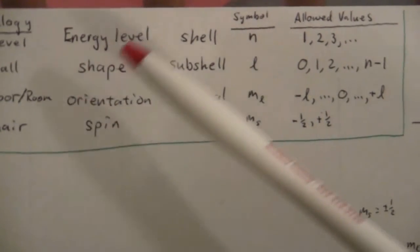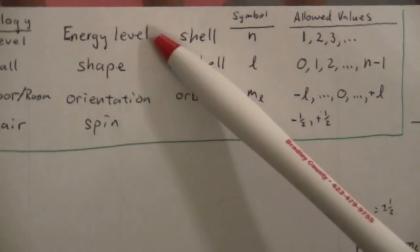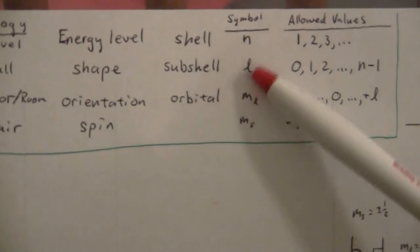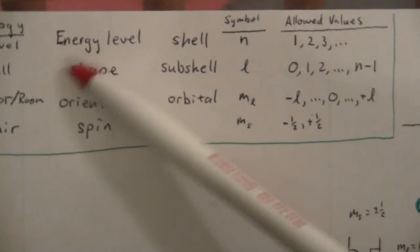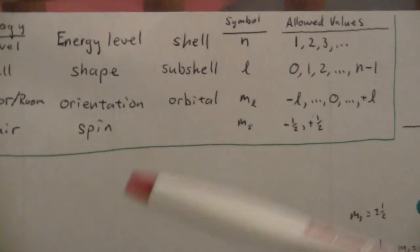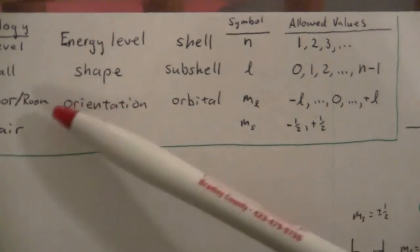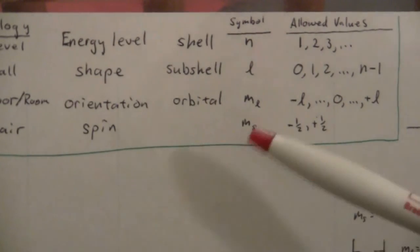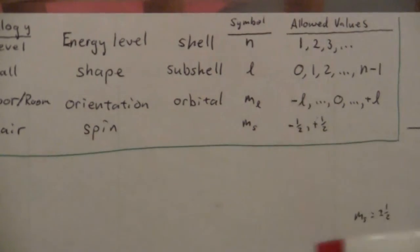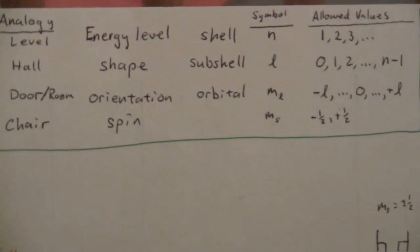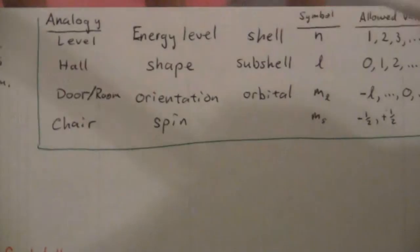N is the energy level. L tells us the shape of the orbitals. M sub L gives us the orientation for the orbitals that the electrons occupy. And then M sub S is the spin. So let's look at the analogy.